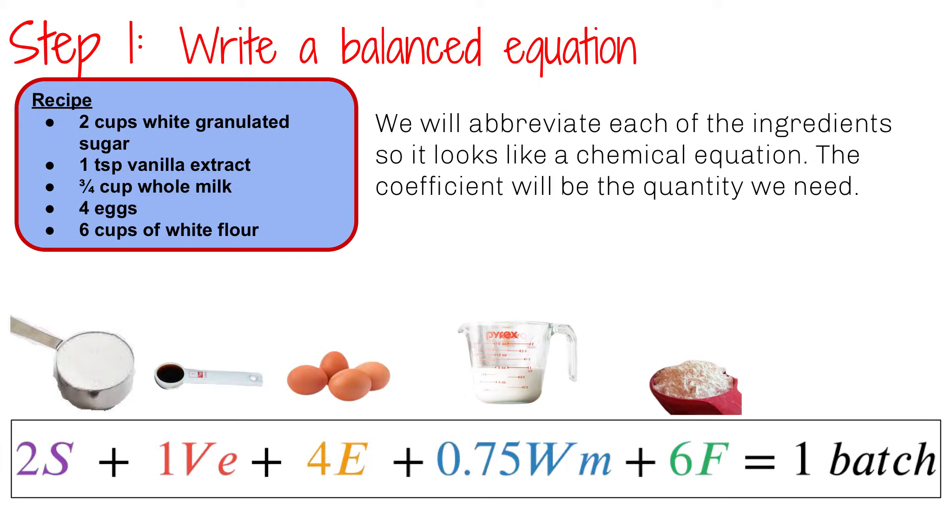Writing a balanced equation. So I'm going to abbreviate each ingredient so it looks like a chemical equation. So I have 2 cups of sugar, 1 teaspoon of vanilla, 4 eggs, 0.75 whole milk, which is the exact same thing as 3 fourths cup whole milk, and 6 cups flour equals 1 batch of cookies.